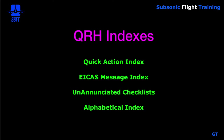The four indexes contained within the QRH are the Quick Action Index, an ICAST Message Index, an unannunciated checklist index, and an alphabetical index, in that order. The Quick Action Index is on the front page of the QRH, and behind that are the other three indexes, which are tabbed. The Quick Action Index is not tabbed because it's at the front of the book.